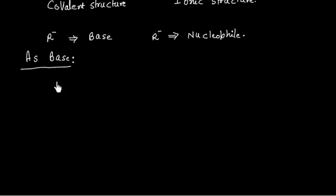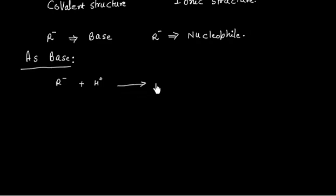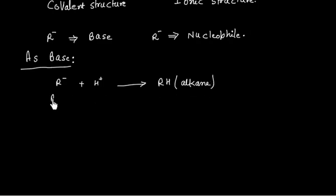As a base, R⁻ will react with H⁺ — which may be coming from dilute acid — and form RH, that is alkane. This is nothing but an acid-base reaction: R⁻ is the base and H⁺ is the acid.